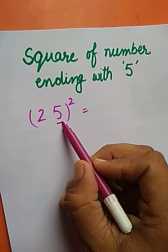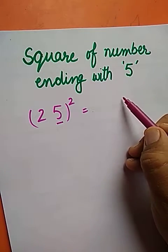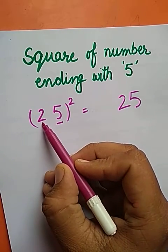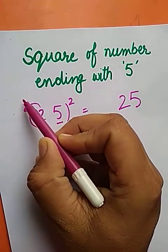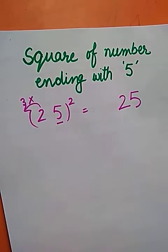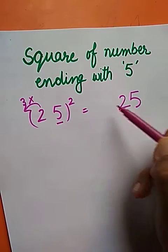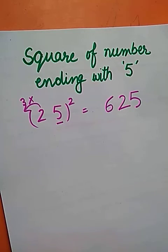The last digit here is 5. Now 5 times 5 is 25. The number next to this 2 is 3, so we will take the product of 3 and 2. 3 times 2 is 6. So square of 25 is 625.